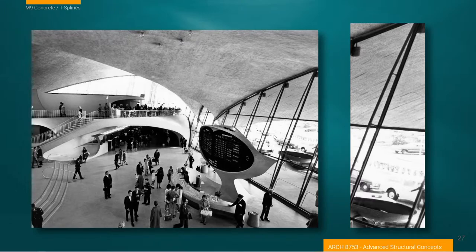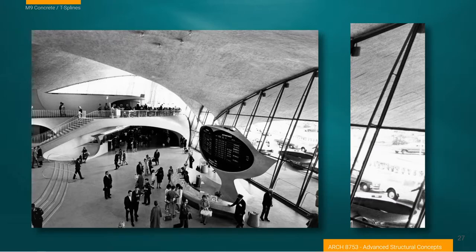Also noteworthy are these bow trusses supporting the glazing systems — they look really very advanced for 1950s design and create a very thin, lightweight glazing system. We'll look at glass in the future in this course, so it's really important to note how advanced this glazing system was for its time.